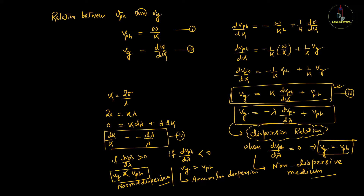The relation between phase velocity and group velocity and the dependence of group velocity on wavelength — this is called the dispersion relation. Both forms are very important: v_g = k·(dv_ph/dk) + v_ph, or equivalently, the difference between group velocity and phase velocity is k·(dv_ph/dk). Putting this relation gives us equation 5.